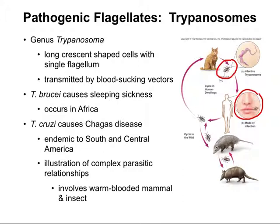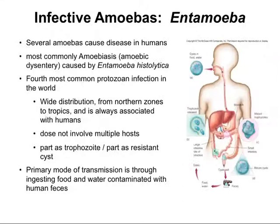You can see that there's a complex parasitic relationship, but not all infections are this complex. Let's take a quick look at a simpler situation: infective amoebas, or entamoebas. There are several amoebas that cause disease in humans, but the most commonly associated one is Entamoeba histolytica. It causes amoebiasis, or amoebic dysentery. This is the fourth most common protozoan infection in the world, with a huge distribution from northern zones all the way to the tropics, and it's always associated with humans.